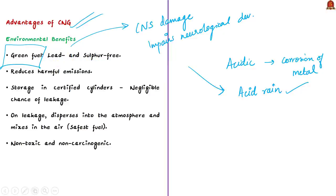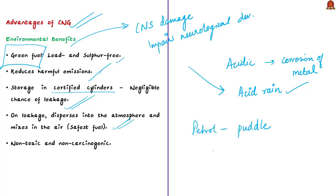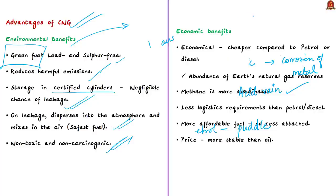CNG reduces harmful emissions and is safer because it is stored in certified cylinders with negligible chance of leakage. Even if there is a leakage, since it is lighter than air, the gas rises up and disperses in the atmosphere, mixing easily and evenly with air. In contrast, petrol forms puddles if it leaks, making both LPG and petrol less safe. CNG is also non-toxic and non-carcinogenic — it doesn't cause cancer. It also has economic benefits, being economical and a preferred alternative fuel source.